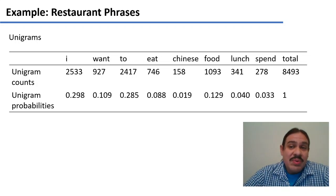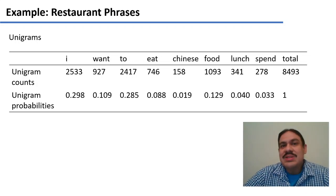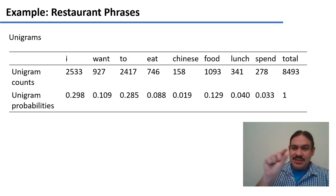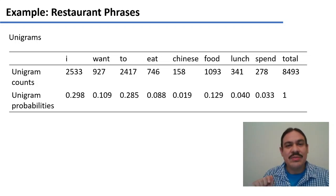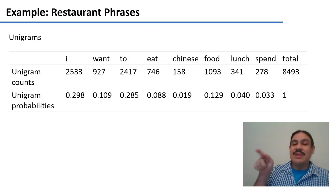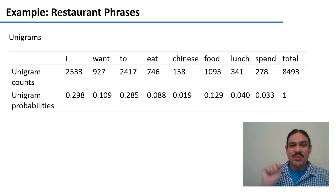So the unigram probabilities are just the counts of how many times we see the word. For example, we see the word I 2533 times. We see the word want 927 times. And then we have the rest of the counts of how many times we see each word. Spend we see 278 times.